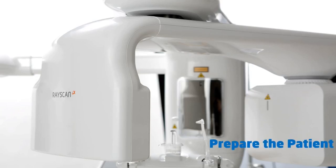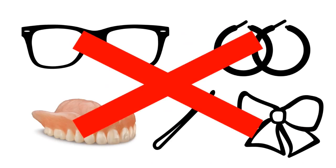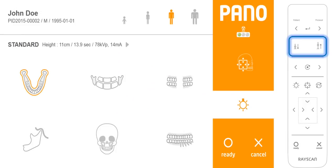Prepare the patient. Ask the patient to remove glasses, dentures, jewelry, hair clips, and pins. Place the protective lead apron over the patient's shoulders.